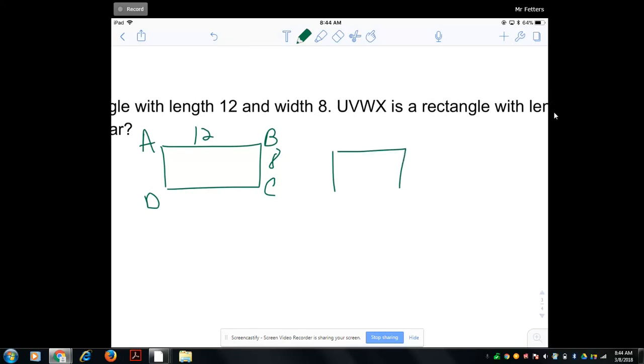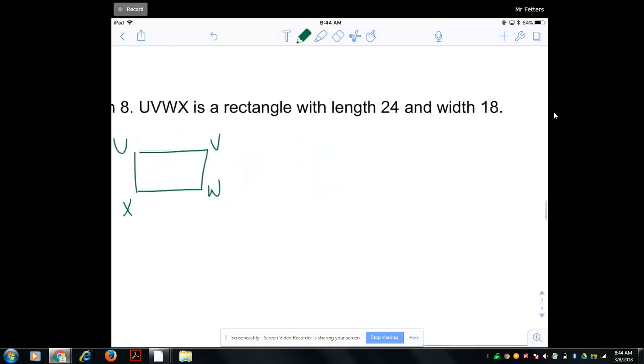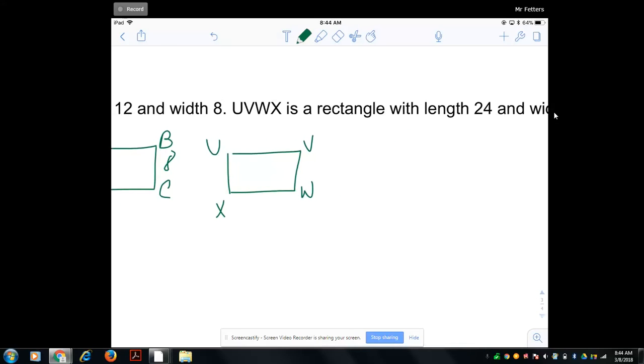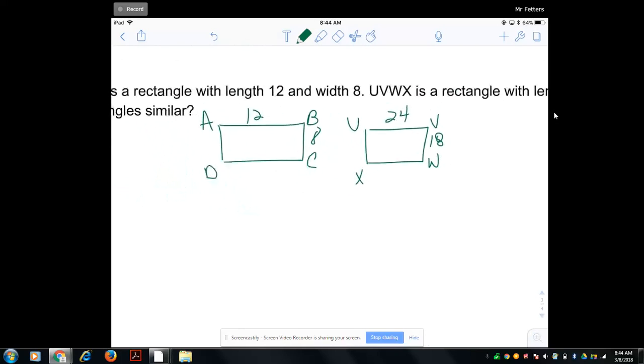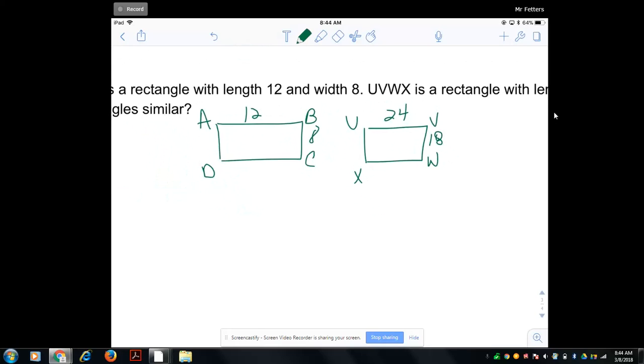And then here's my other rectangle - U, V, W, X. And this is 24 and 18. So obviously I got this wrong. The UVWX should be larger.